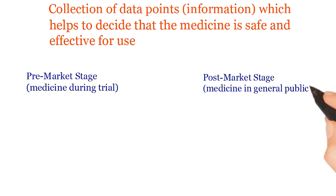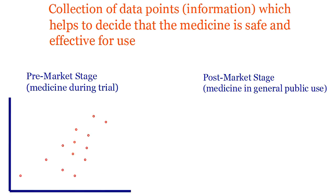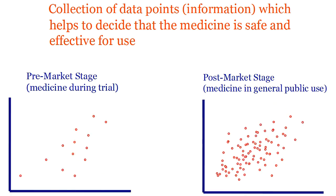Here you can see in this slide the dots representing the scope of information collection in a controlled environment and in the general public. It appears this is just a representation — it's not giving the absolute values.